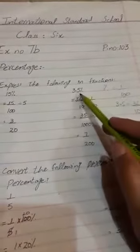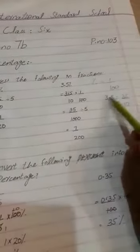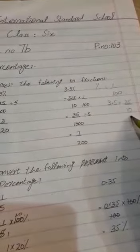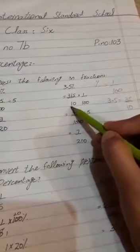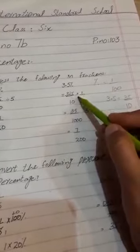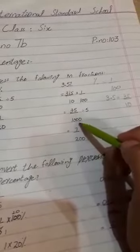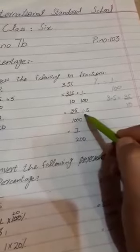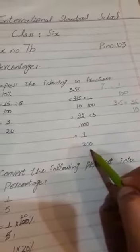The next part is 3.5%. The percent value equals 35 by 10, then multiply by 1 by 100. So 35 by 1000. Using the 5 times table for cutting, we get 7 by 200 as the answer. Next question.